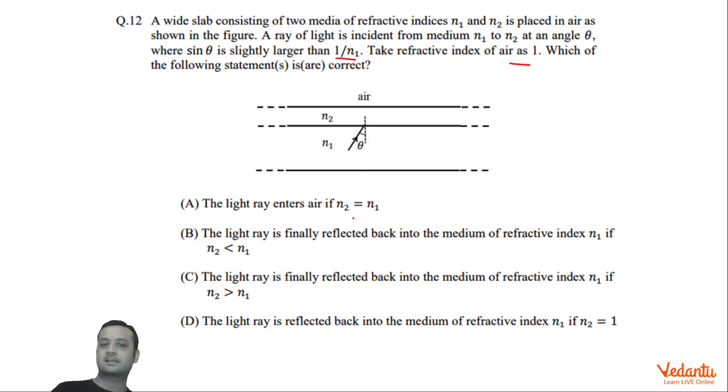We have to choose the correct options. The options are: light will enter air if N2 equals N1; light will be finally reflected back into the medium if N2 is less than N1; light rays finally reflected back into the medium N1 if N2 is greater than N1; light is reflected back into the medium of refractive index N1 if N2 equals 1.